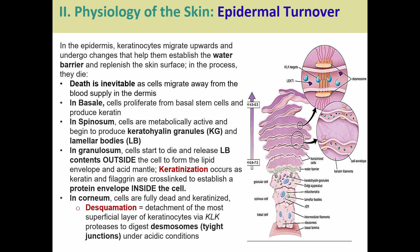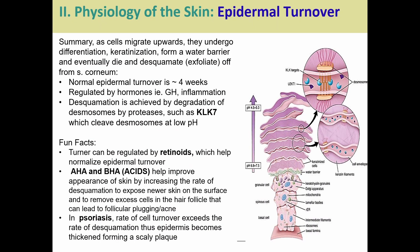Moving through the lucidum and up to the corneum, the cells have fully died. They're keratinized and begin desquamation — they detach as desmosomes and junctions dissolve and break down via enzymes. You're constantly shedding skin; the ones at the very top in the corneum are the ones being shed. It takes about four weeks for a cell to go from the bottom all the way up to the top, but this is regulated by hormones — growth hormone, inflammation, and similar factors control the turnover rate.